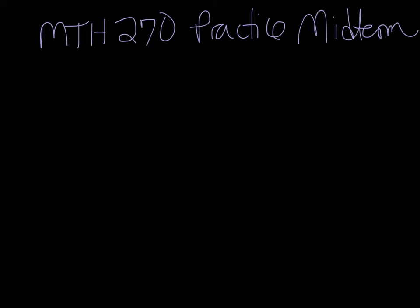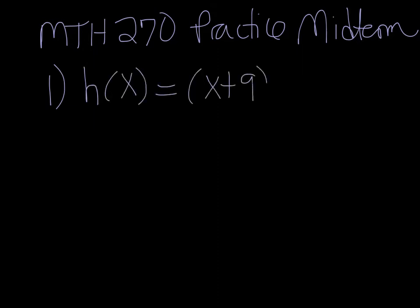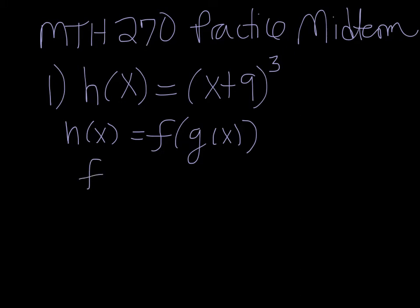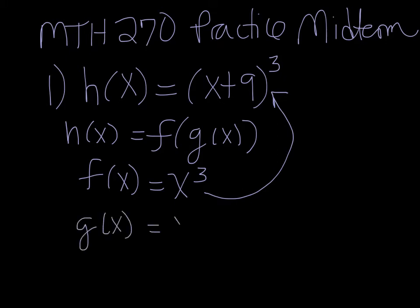Number one: you should print out the practice midterm that I posted so you can follow along. It says the function h of x equals x plus 9 cubed can be expressed in the form f of g of x, where f of x is x cubed and g of x is... well, your function is h of x equals x plus 9 cubed, and you want h of x to be f of g of x. It tells you that f of x is x cubed — what do you have to replace x with to get x plus 9 cubed? Well, it must be x plus 9, so your inside function is x plus 9.